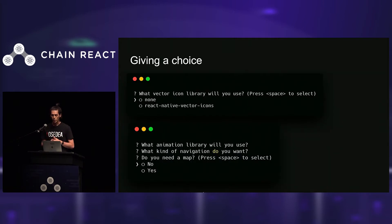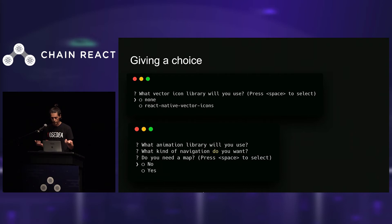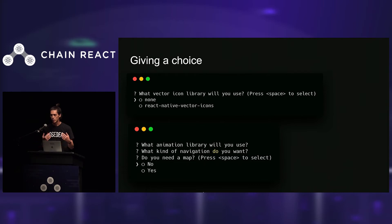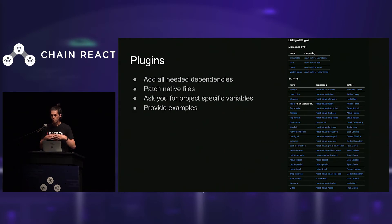An Ignite boilerplate is great because it's going to give you a choice. When you create a new project, you could choose to have a vector icon library or not, an animation library, JS navigation or native navigation. For example, if you need a map in your application — setting up React Native Maps today can take up to 20 or 30 minutes even if you know what you're doing, because you need to add dependencies and modify configuration. With Ignite, you have a choice on what you want in your app and the boilerplate is going to make it work on its own.